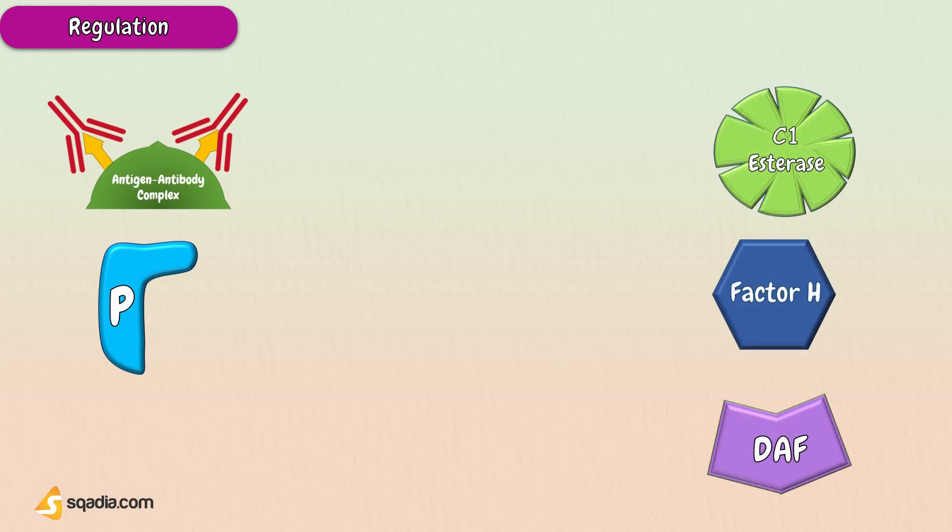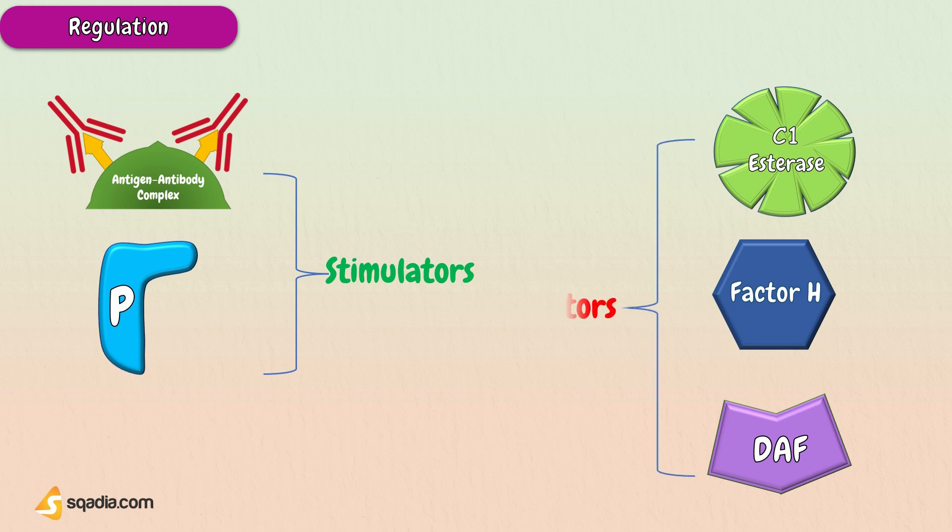As for the regulation of the complement system, there are many factors that can affect the regulation. We will talk about the five important ones here: antigen-antibody complex, C1 esterase inhibitors, Factor H and Factor I, properdin or Factor P, and decay-accelerating factor. Regulatory components can be divided into stimulators and inhibitors.